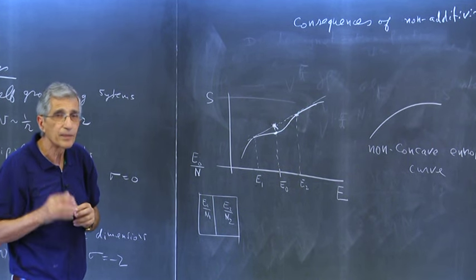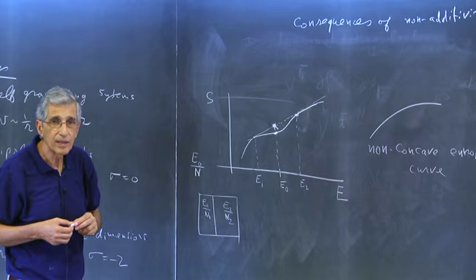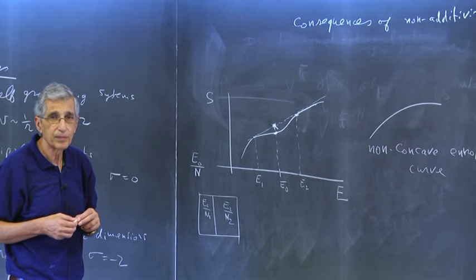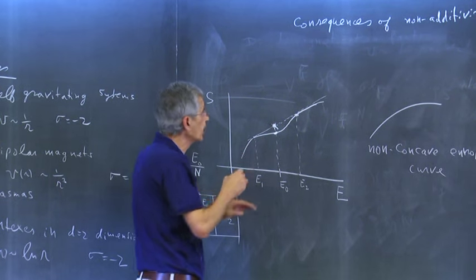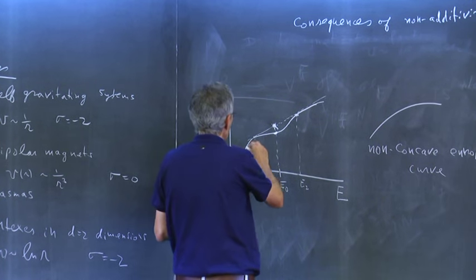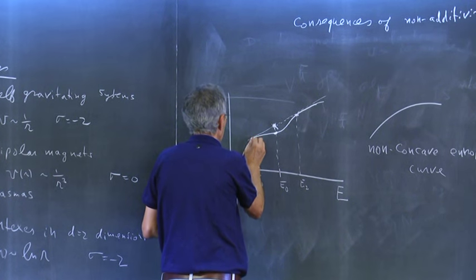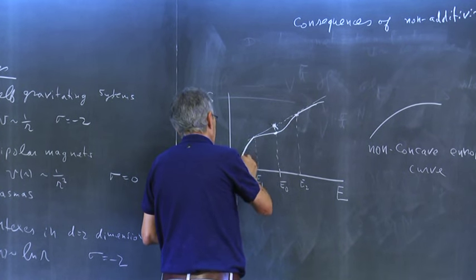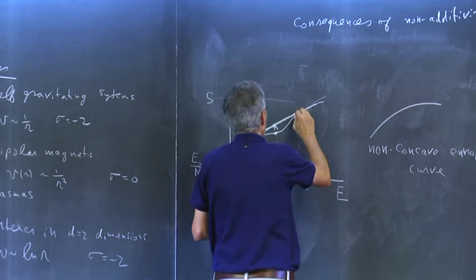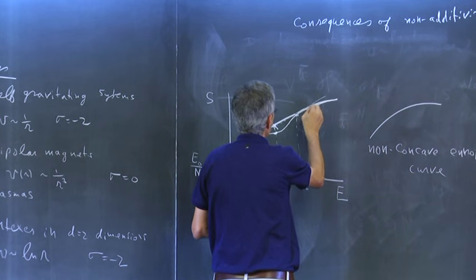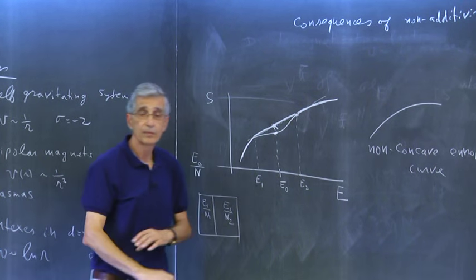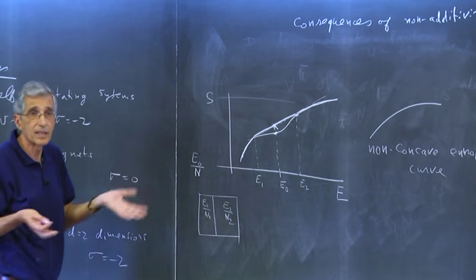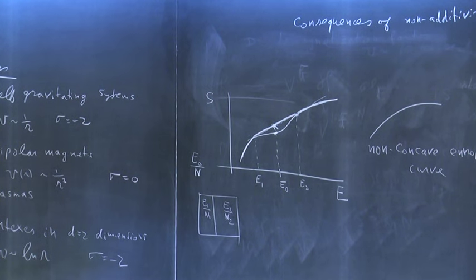In short-range systems, when you have a non-concave region you replace it with a straight line — the entropy curve becomes a concave function, which is stable. The non-concave region gets replaced by the Maxwell construction — a straight line connecting two points — and this straight line represents two-phase coexistence. This is the usual picture for phase transitions in short-range systems, and it relies fundamentally on additivity.